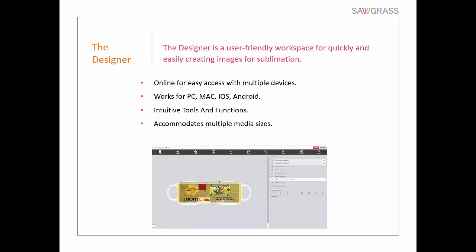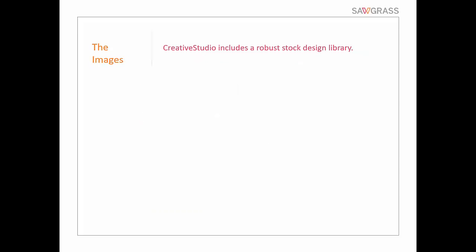Creative Studio is really and truly the first integrated graphics system created specifically for sublimation. It has five key components: the Designer, the Stock Design Library, Product Templates, Art Templates, and a Print and Color Manager. It has a very user-friendly workspace — simple to understand, not too many drop-downs, not a lot of confusion — and it works on all different devices with the same toolbars and tools. You can hand somebody an iPad, they design in the cloud, and then print from your Mac or PC.